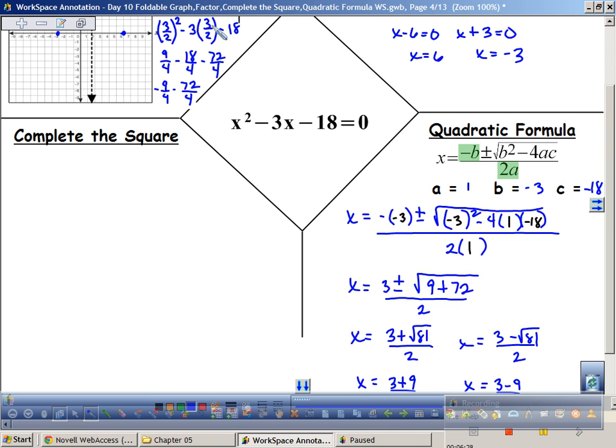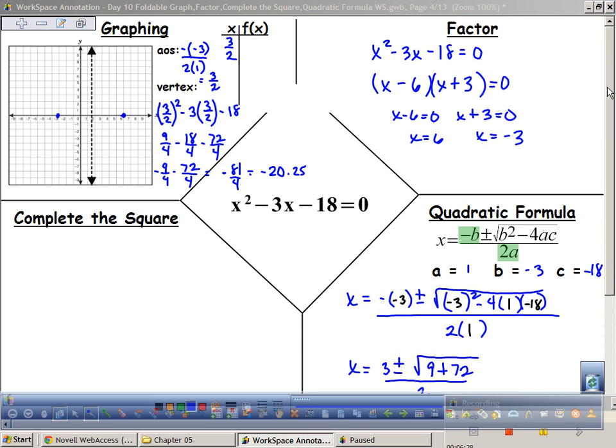9 minus 18 is negative 9 fourths minus 72 fourths. What's negative 9 and negative 72? Negative 81. Check that out, look what's under there. Is it scaring you? This is negative 81 fourths, which is negative 20 and one-fourth. Let's see if that makes sense. My vertex is negative 20.25. I'd be way down here. How can I check to make sure that makes sense? You can do it with 0.